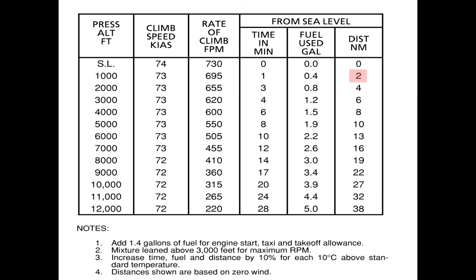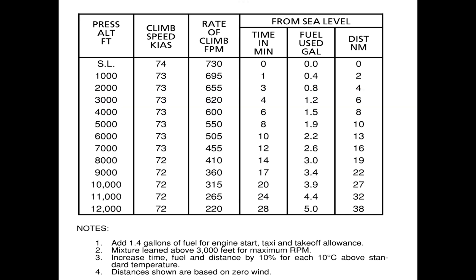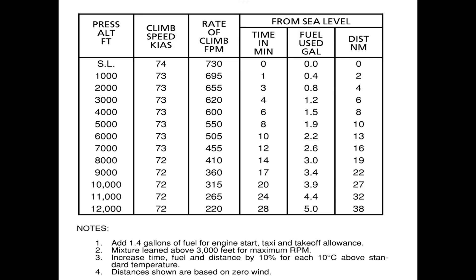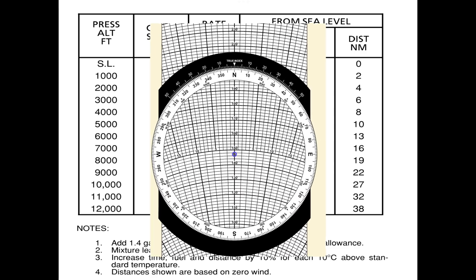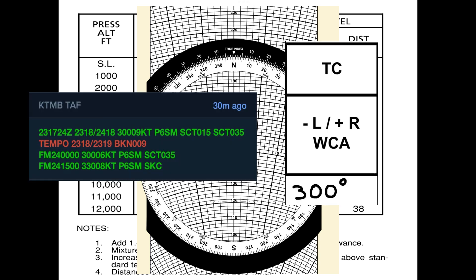Now, for our distance, we cannot use the one shown on the table, considering that Note 4 specifies that the value provided is only based on zero winds. Considering that our departure winds at 1600 Zulu are 330 at 8 knots, we will have to find our distance using a different method. We will start by checking our indicated airspeed at sea level, and then we will go from indicated airspeed to calibrated airspeed using our airspeed calibration chart provided in our POH, which results in a calibrated airspeed of approximately 73 knots. After this, we will go from calibrated to true airspeed using our flight computer, which results in 74 knots. And finally, using the back portion of the flight computer, we will convert our previous value to ground speed using the winds mentioned in our terminal forecast and the true course for our first leg of climb in our nav log, which results in a ground speed of 67 knots.